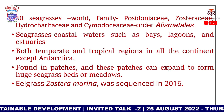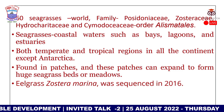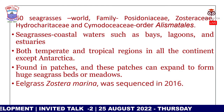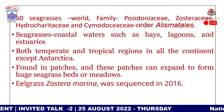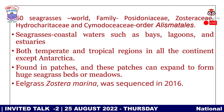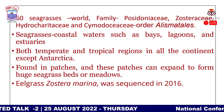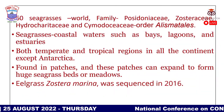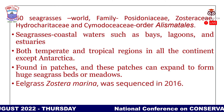There are more than 60 species of seagrasses reported worldwide, under the families Posidoniaceae, Zosteraceae, Hydrocharitaceae, and Cymodoceaceae, in the order Alismatales. Seagrasses are found in coastal waters such as bays, lagoons, and estuaries.